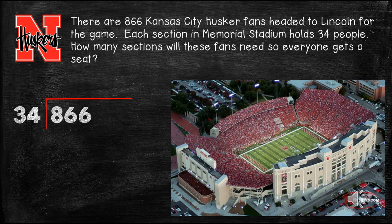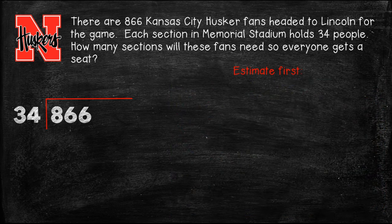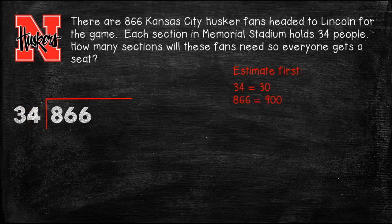Hopefully you came up with 866 divided by 34. Now we're going to solve that using the standard algorithm, but the first thing we need to do is estimate. We estimate by rounding each number to its highest place value: 34 rounds to 30, and 866 rounds to 900. So 900 divided by 30 — using the battle of the zeros strategy, 9 divided by 3 is 3, add one zero — our estimate is 30, but it is definitely going to be an overestimate.